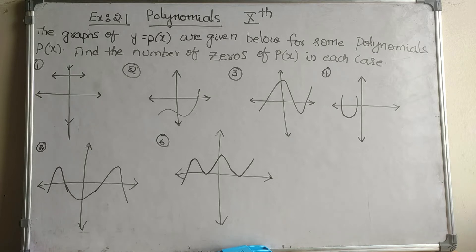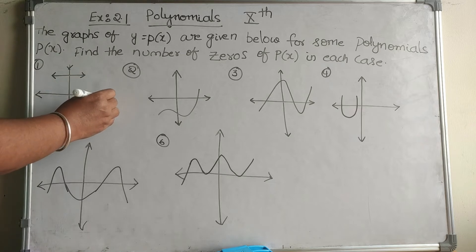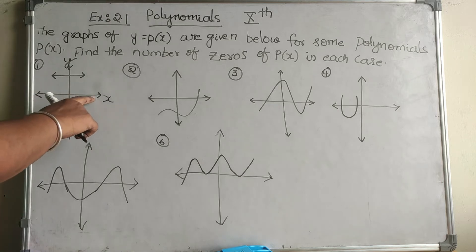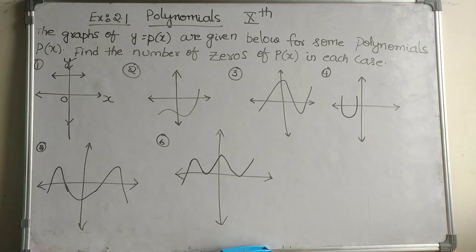When we see the figures, this is the x-axis and this is the y-axis. If any line is touching this line, then we can say the x-axis is having a zero. But in this figure, nothing has touched this line, so I can say there are zero zeros.